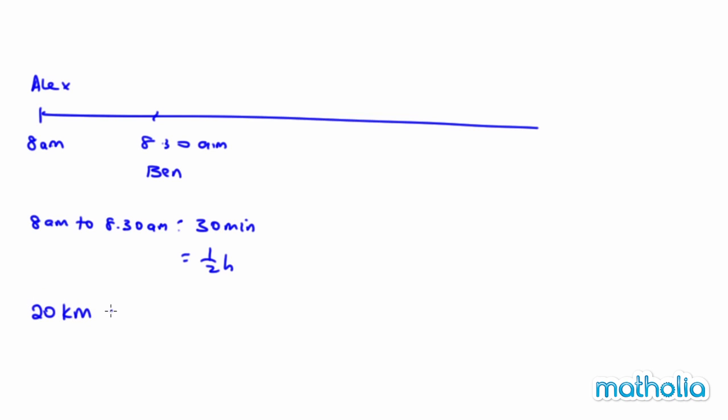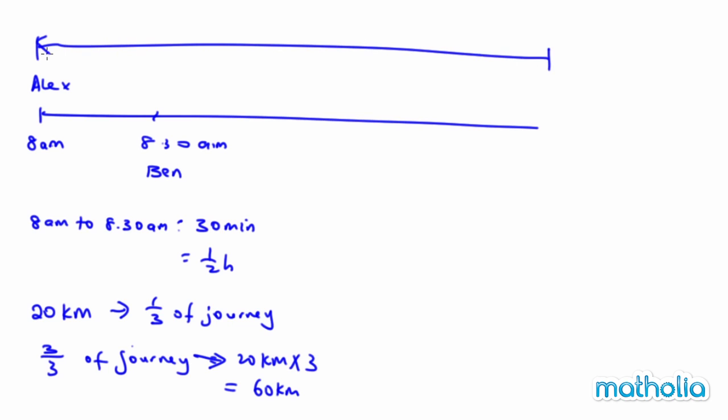So I can say 20 kilometres represents one-third of Alex's journey. So if I want to find 3 out of 3 of journey, it is 20 kilometres multiplied by 3 and is equal to 60 kilometres. So immediately, you know that the total distance is 60 kilometres.